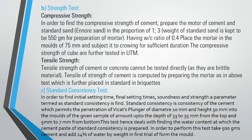Strength test — Compressive strength: In order to find the compressive strength of cement, prepare the mortar of cement and standard sand in the proportion of 1:3, having a water-cement ratio of 0.4. Place the mortar in moulds of 75 mm and subject it to curing for a sufficient period; the compressive strength of the cubes is further tested using a UTM.